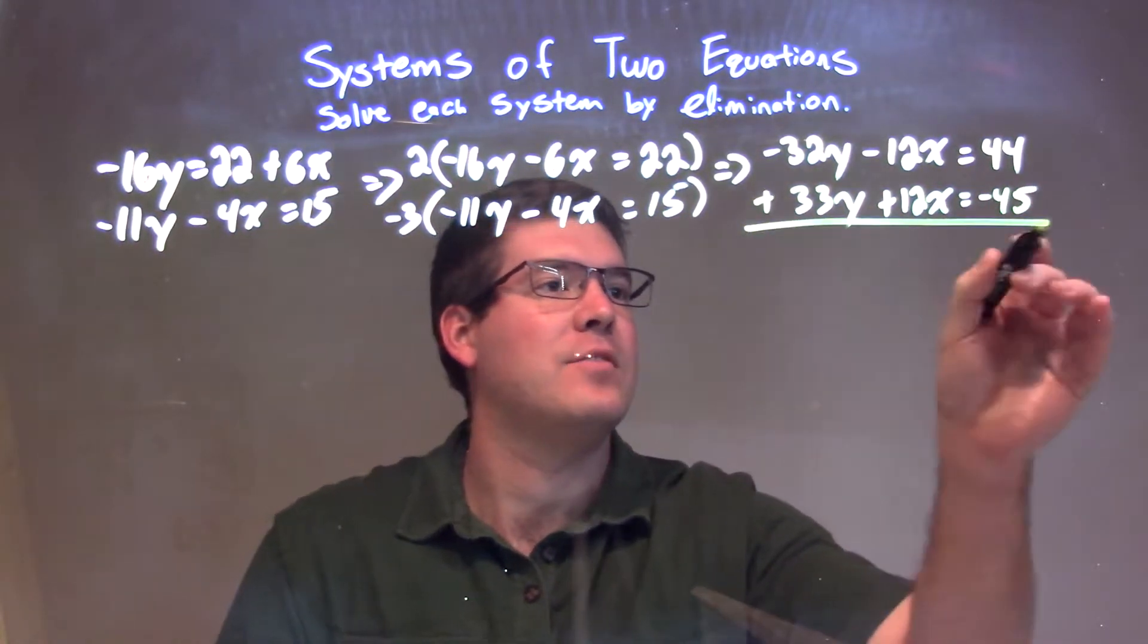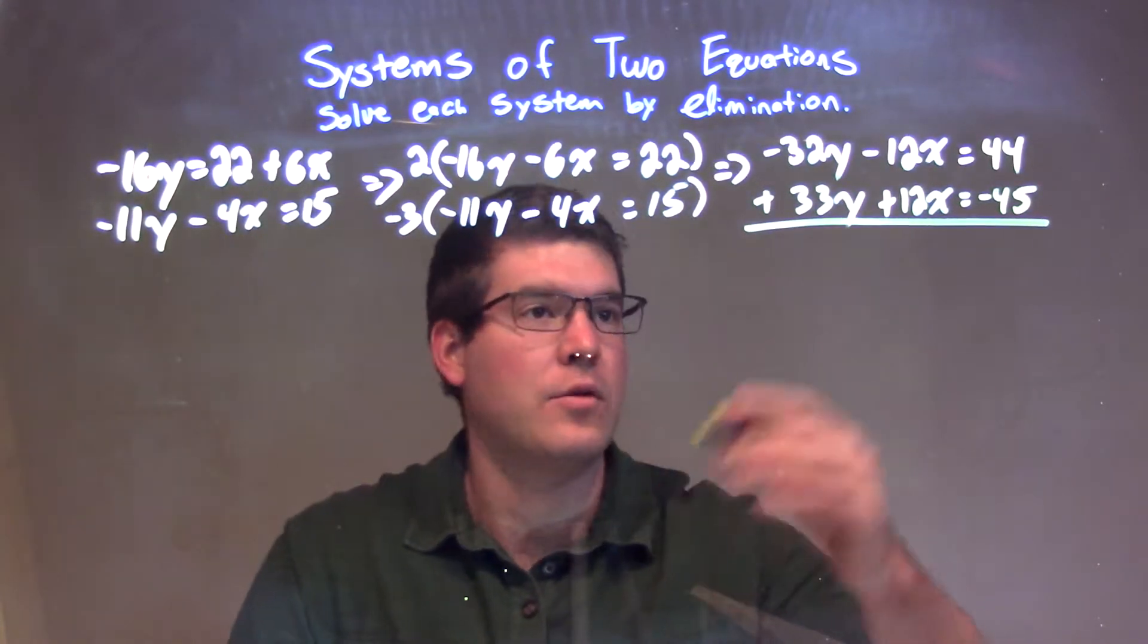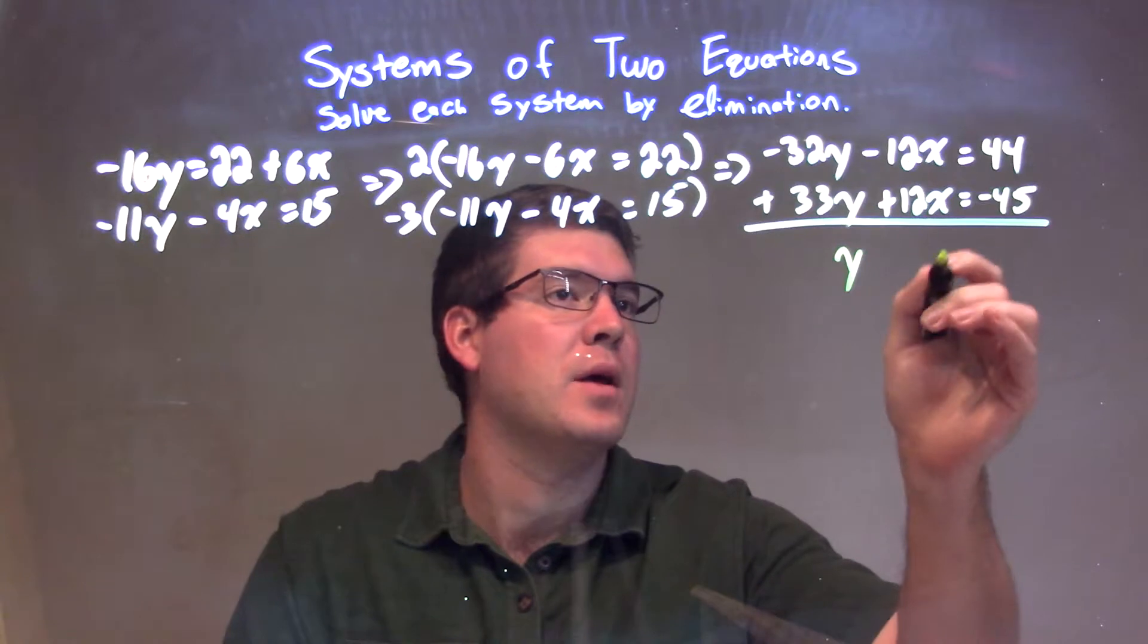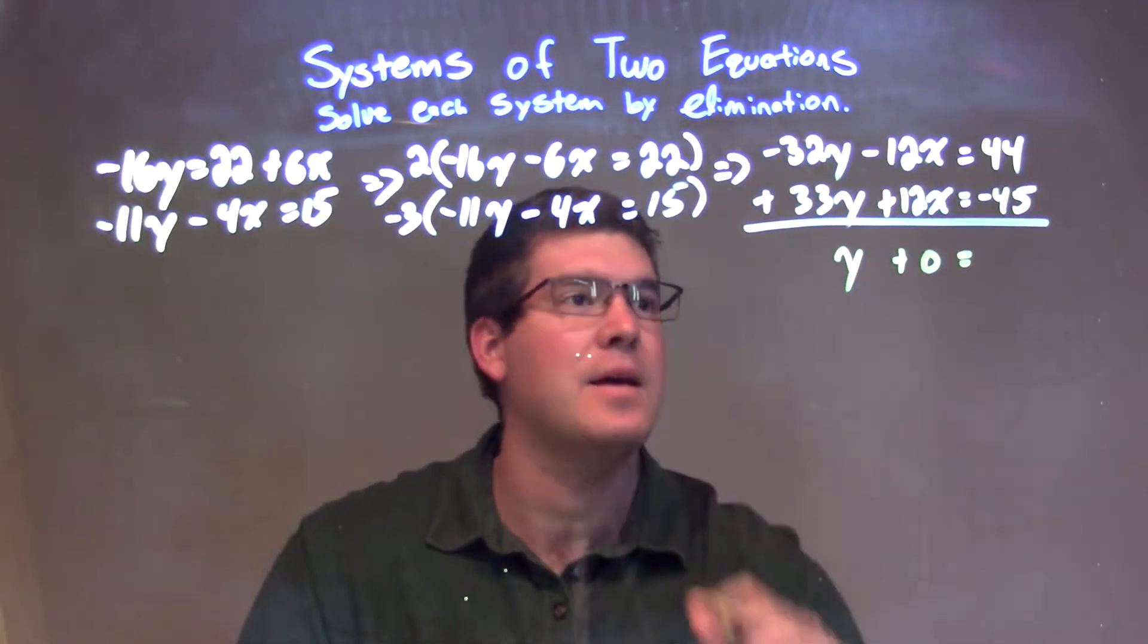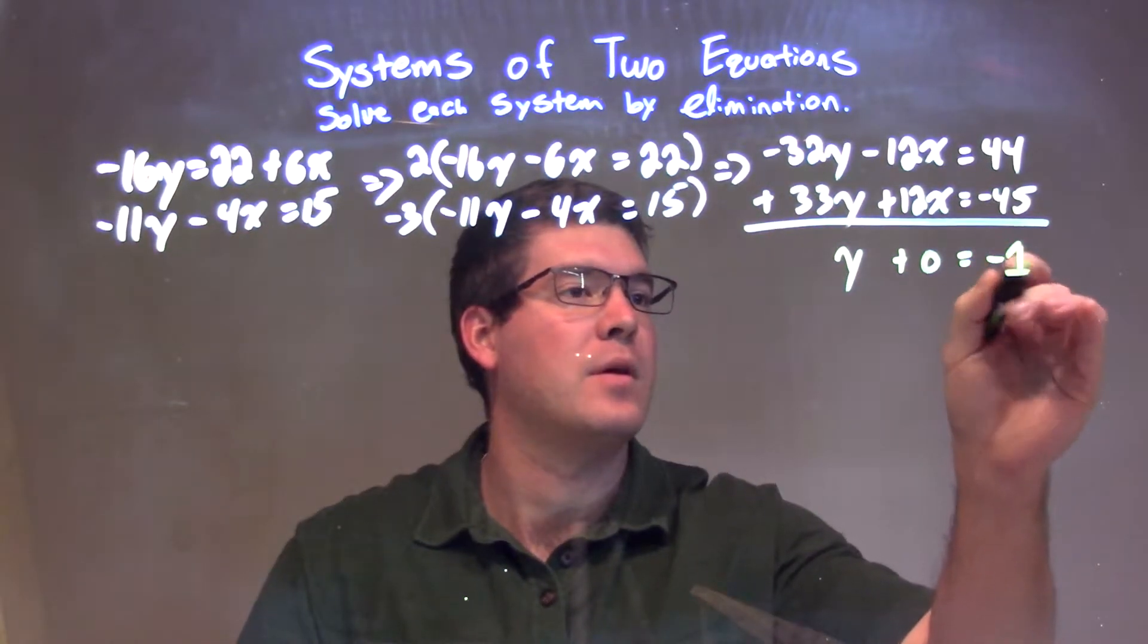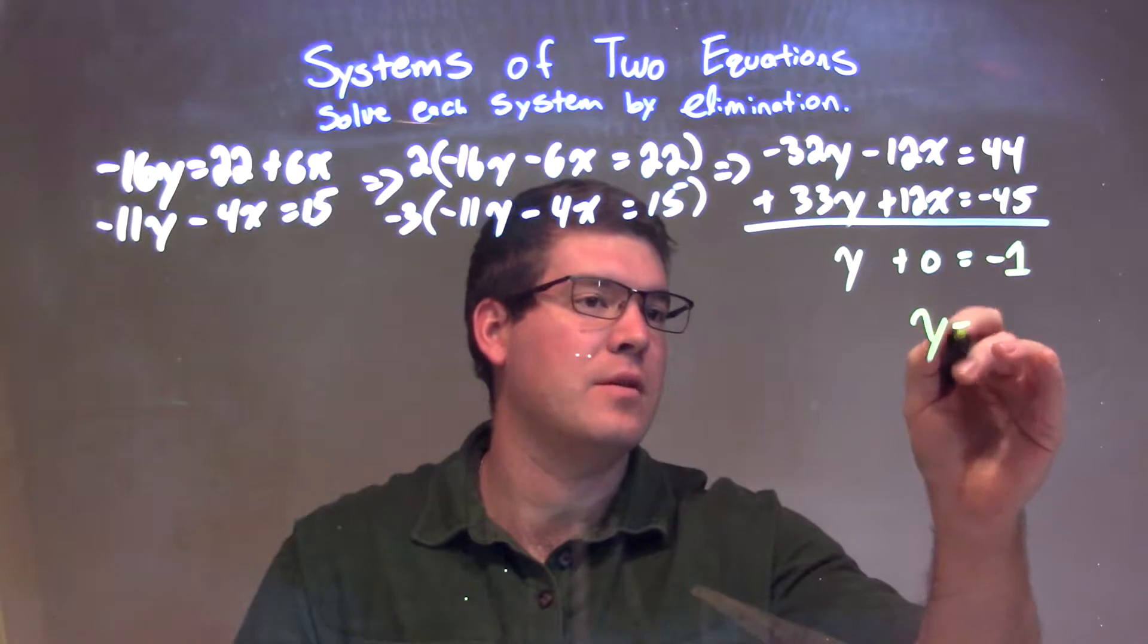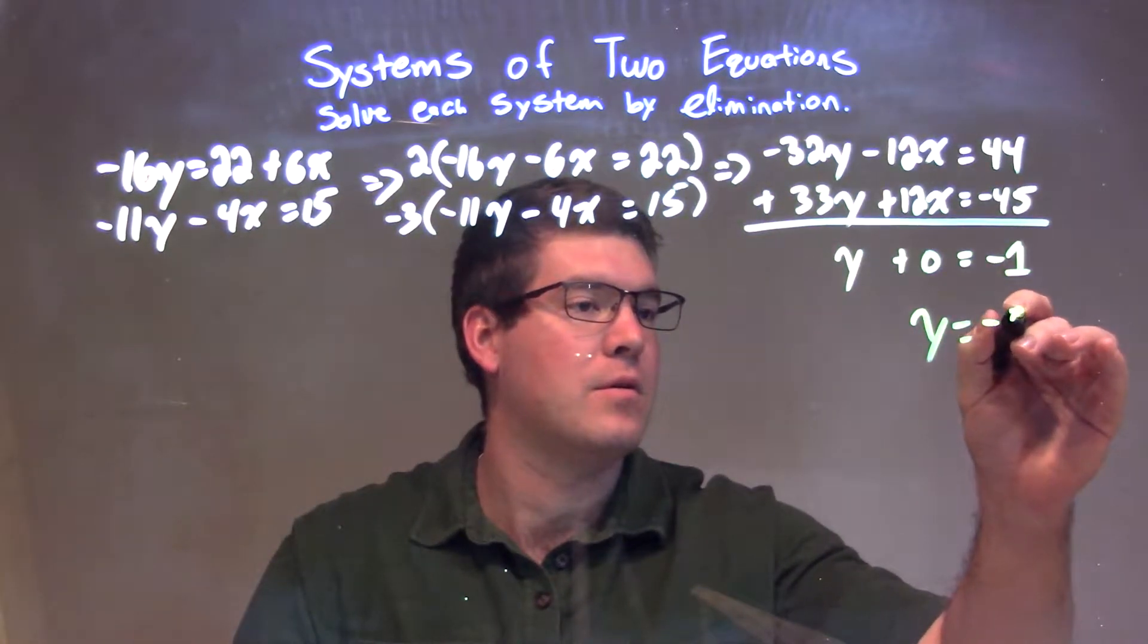When I add these two equations together, negative 32y plus 33y is just 1y. Negative 12x plus 12x is 0. And 44 plus a negative 45 is a negative 1. We don't need the 0. So really, right here, we got y equals negative 1.